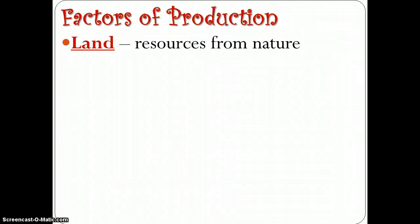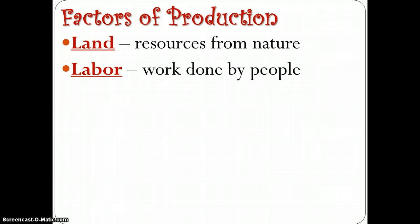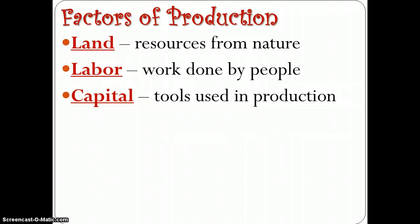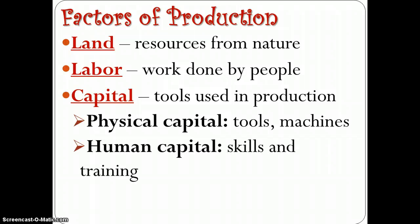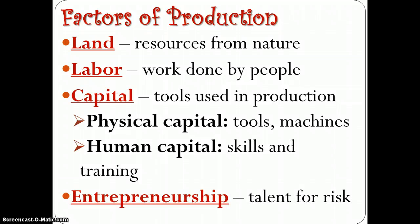When we talk about factors of production, we're talking about four main ones. The first is land — the resources that come from nature. The second is labor, which is the work done by people. Third is capital, which are the tools used to make things that are then sold in the goods markets. Capital can be broken into physical capital, which is tools and machines, as well as human capital, which are your skills and training. And finally, entrepreneurs or entrepreneurship — the talent or willingness to take a risk and bring resources together to create products. All four of these factors are essential to the creation of goods and services.